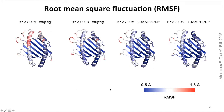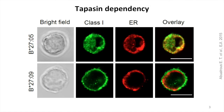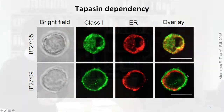Based on this, we think that B2705 needs the chaperone tapasin to bind peptides in the endoplasmic reticulum. To check this experimentally, we used microscopy to study the tapasin dependency of both proteins in binding peptides and reaching the cell surface. As we see here, the B2705 protein is retained in the endoplasmic reticulum, while the majority of B2709 is seen as a green signal on the cell surface. If you check our paper, you will find more experimental and theoretical evidence for this correlation.